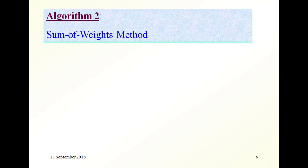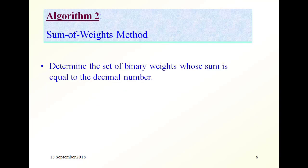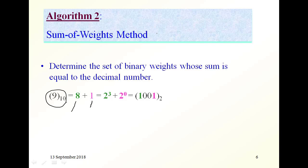Algorithm 2 uses the sum of weights method. Let's take an example. Here we want to convert this decimal number into binary. 9 is equal to 8 plus 1. Why did we choose 8 plus 1, and not 7 plus 2? Because 8 is a power of 2, and 1 is a power of 2.